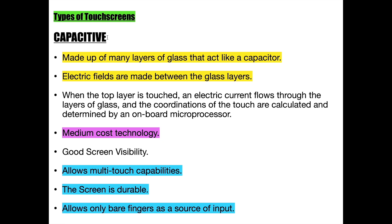The first type of touch screen is the capacitive touch screen. It is made up of many layers of glass that act like a capacitor. Electric fields are made between the glass layers. When the top layer is touched, an electric current flows through the layers of glass, and the coordinates of the touch are calculated and determined by an onboard microprocessor. This touch screen is a medium-cost technology with good screen visibility and multi-touch capabilities. The screen is durable but allows only bare fingers as a source of input.